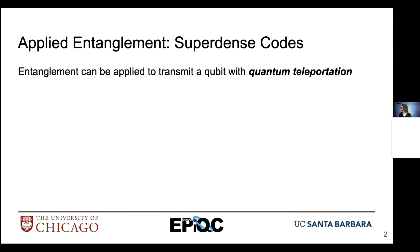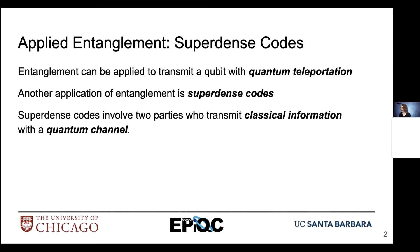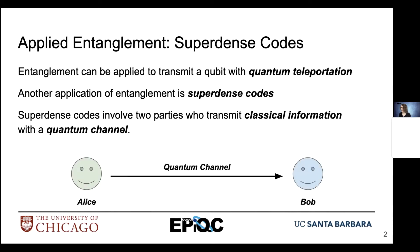When we think about teleportation, we're actually using entanglement to transmit a qubit. But when we look at superdense codes, we are trying to transmit classical information with the use of a quantum channel. So once again, we're working with two parties, but we are using a quantum channel to transmit two bits.